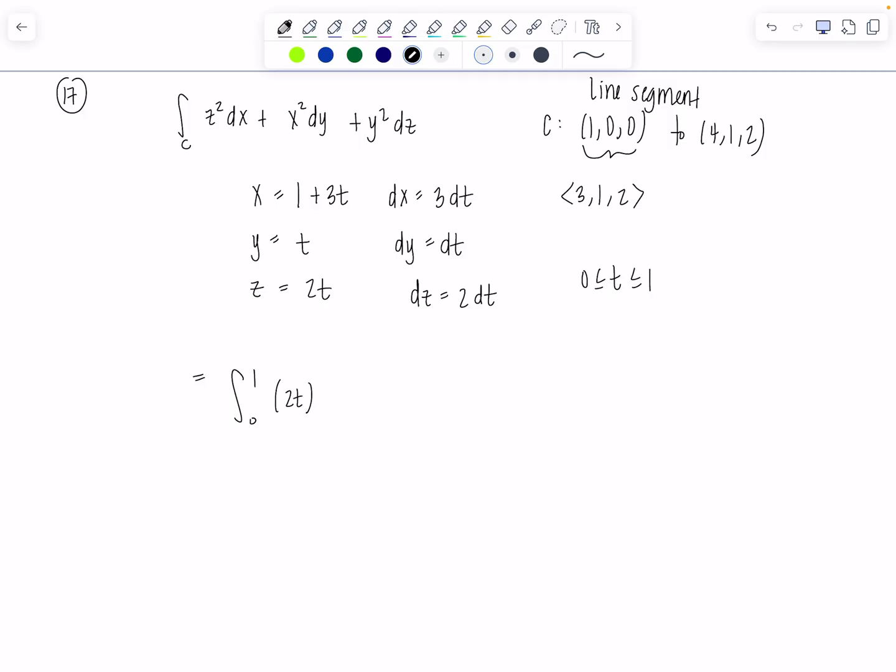Z squared, so 2T squared times 4T squared. DX is 3DT plus X squared. So 1 plus 3T squared. DY is DT plus Y squared, T squared. And DZ is 2DT. What happened? So I'm wondering why we don't use the magnitude of the gradient? We don't need it. Why would you do that? This is not a vector field. So you use them for vector fields? Yeah. No, no. And this doesn't really represent anything.